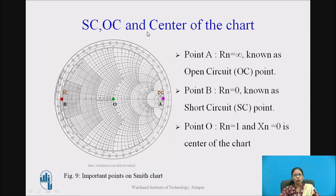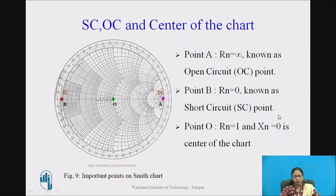Now, let us locate short circuit, open circuit, and center of the chart. The resistance at the rightmost point is infinite, so Rn = ∞ is point A — the open circuit point. As Rn values along the real axis go on reducing, reaching 0 at the leftmost point, that is the short circuit point where Rn = 0. The center of the chart, point O, is between these two, where Xn = 0 and Rn = 1.